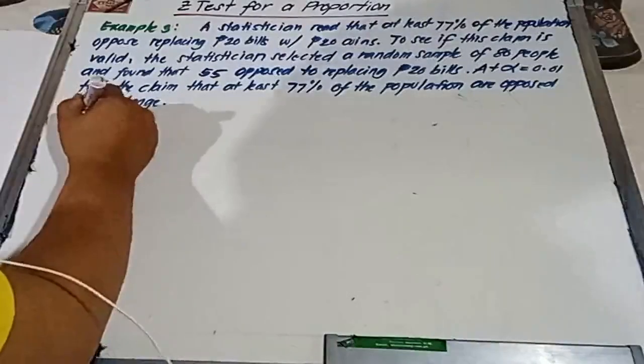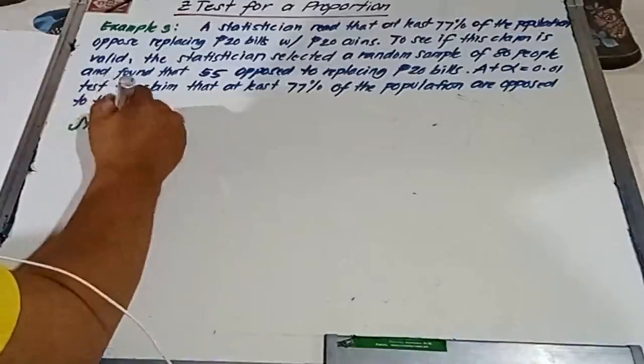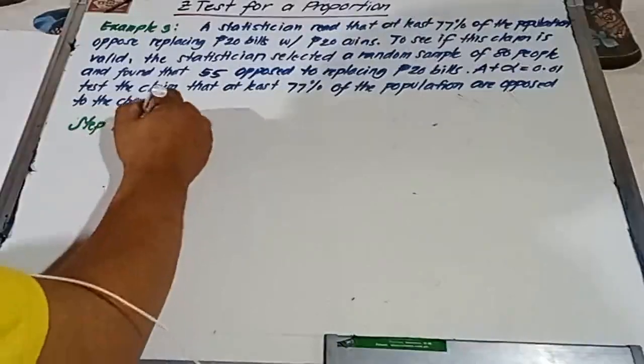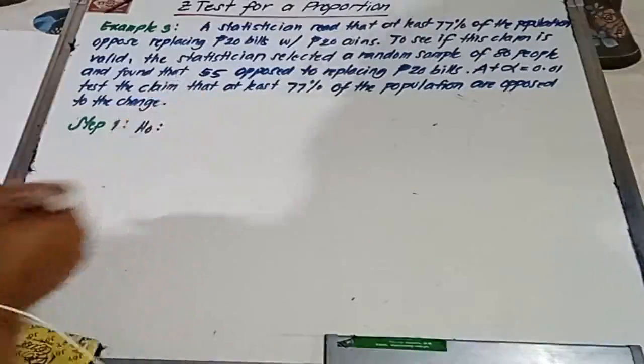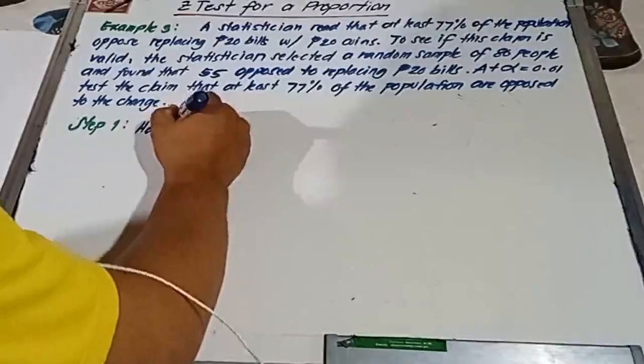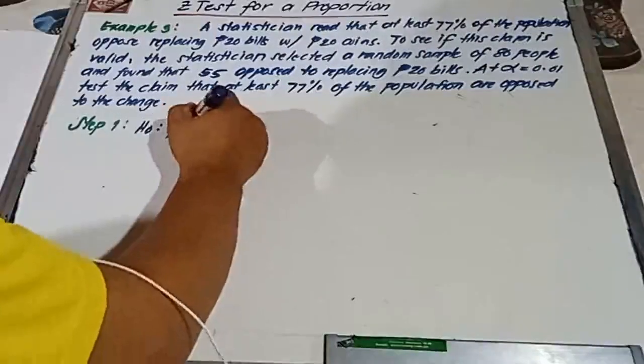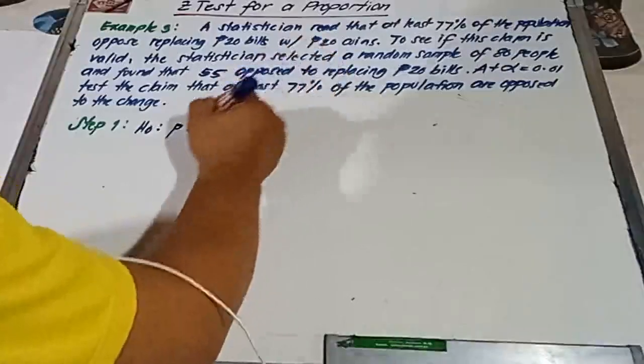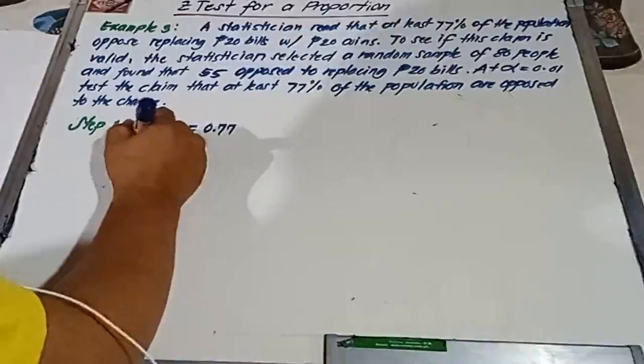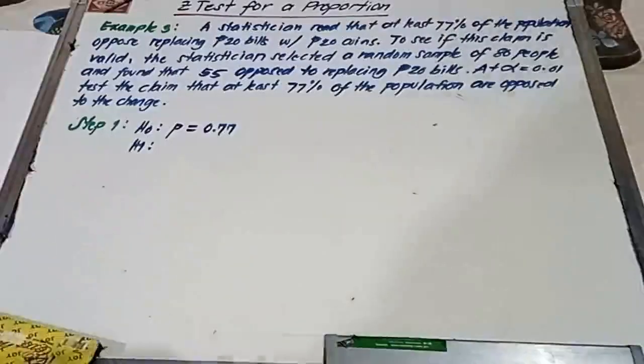We have step number one. We're going to state the null hypothesis and identify the claim. Our null is there is no difference, meaning our population proportion is equal to 77% or 0.77.